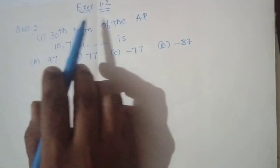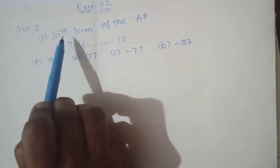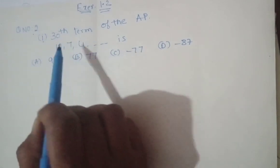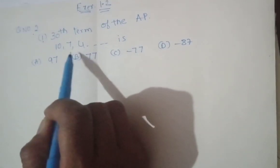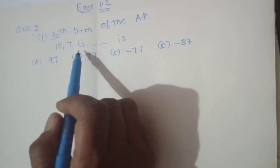Question number 2 from Exercise 1.2. The first sub-question says to choose the correct option. It asks for the 30th term of the AP. You are given the AP: 10, 7, 4, and so on.